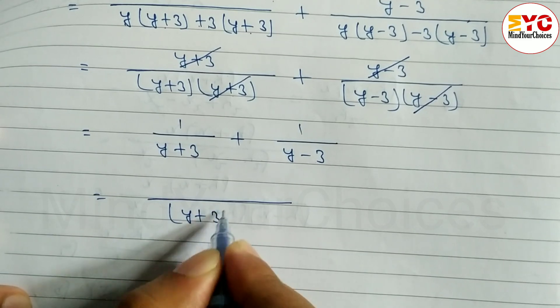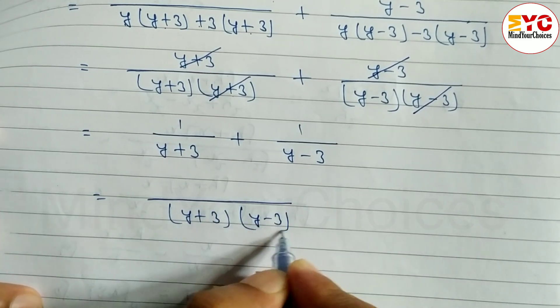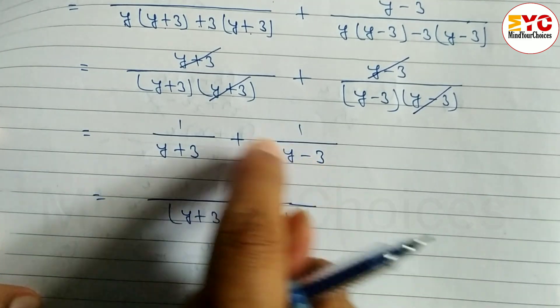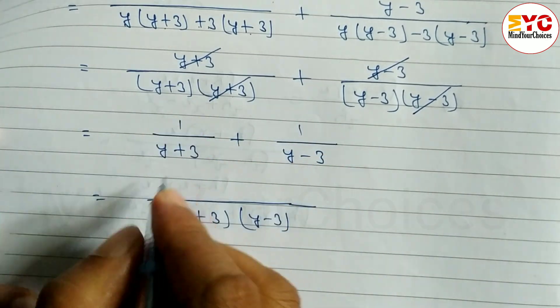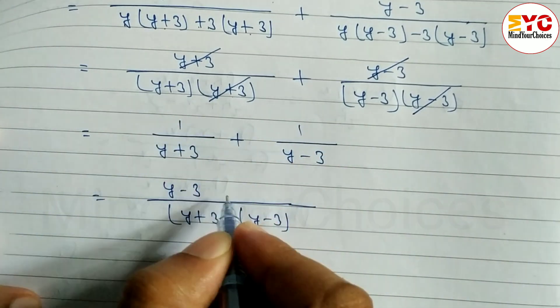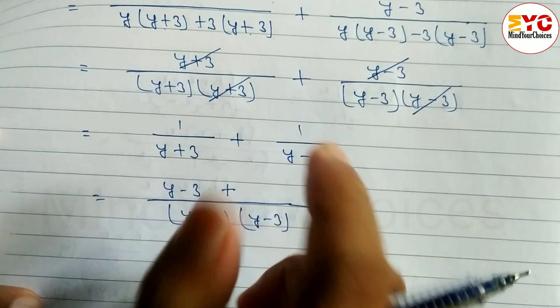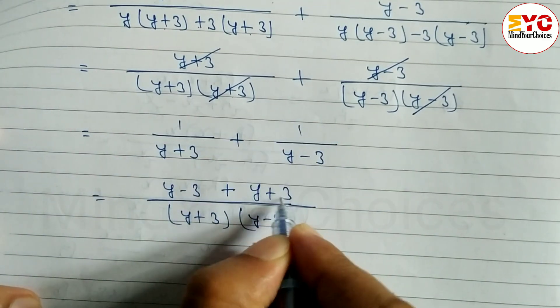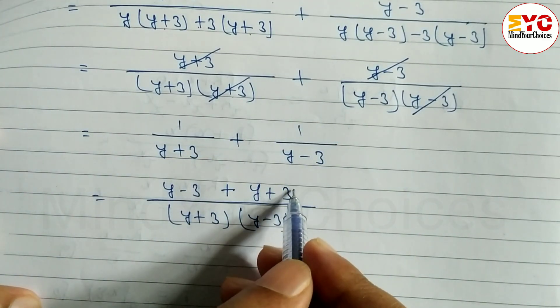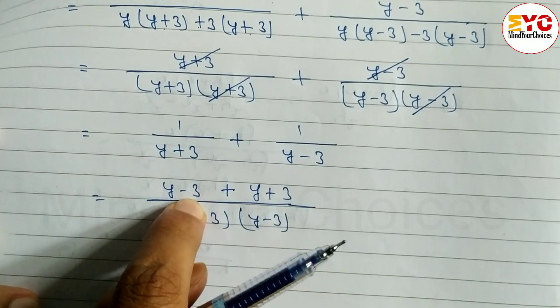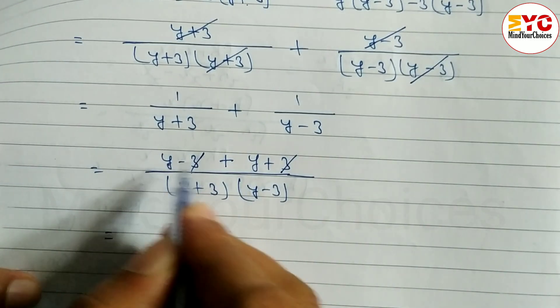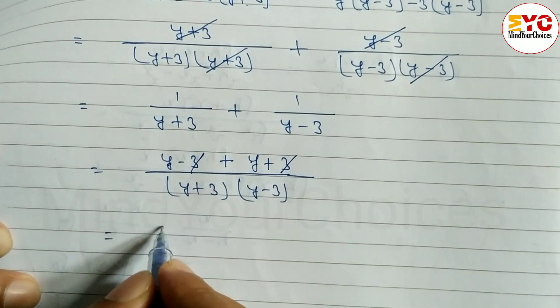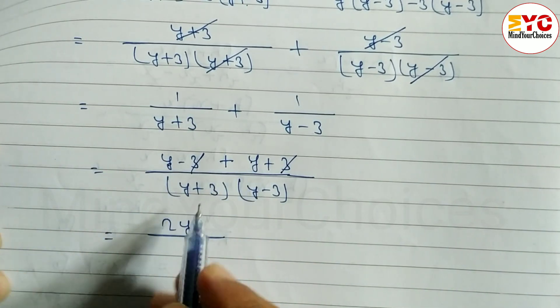So we multiply: (y minus 3) times 1 gives y minus 3, plus (y plus 3) times 1 gives y plus 3. The positive 3 and negative 3 cancel. So y plus y equals 2y divided by - this is in the form (a plus b)(a minus b) which equals a square minus b square - so y square minus 3 square.